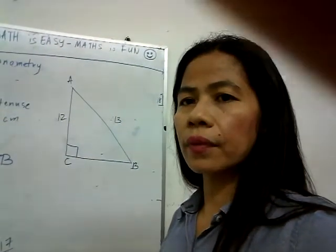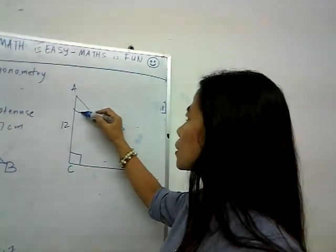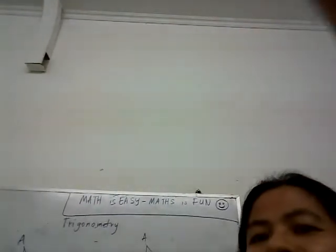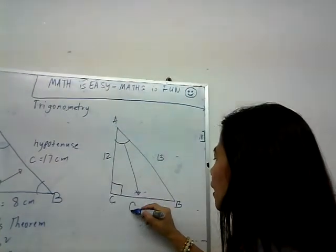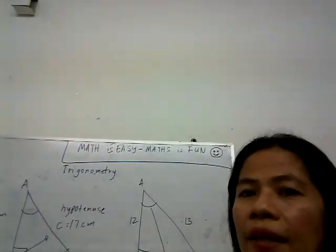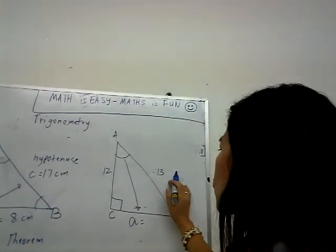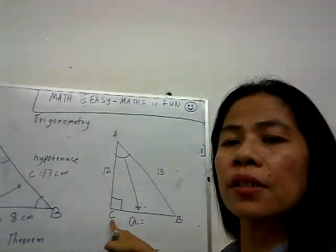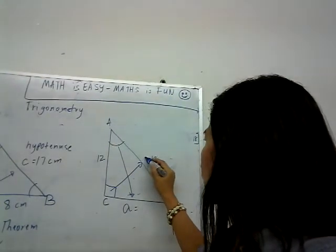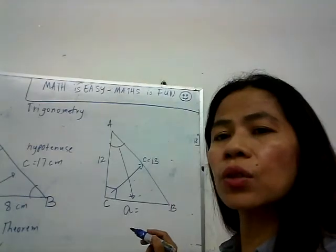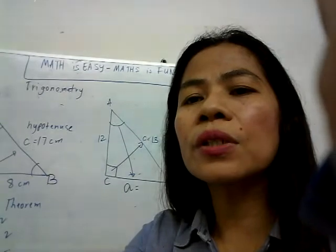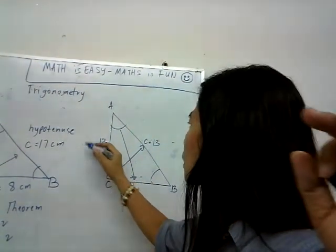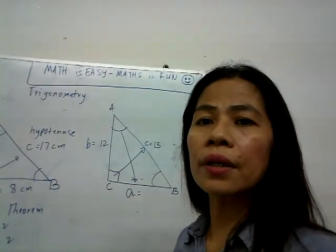On the next triangle, since this is angle A, then BC is our side a. For the largest angle, which is angle C, that will be our side C — the hypotenuse — which is given as 13. And for the opposite of angle B, we call it side b, which is equal to 12.